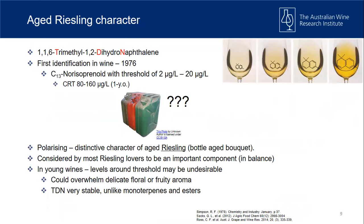That aged Riesling character comes from the compound 1,1,6-trimethyl-1,2-dihydronaphthalene — you can understand why we call it TDN. We've known about this in Riesling for quite a number of years. It has a threshold of around 2 micrograms per litre up to 20 micrograms per litre, and there's a consumer rejection threshold from Ross and co. It does have to get quite high before people reject it.